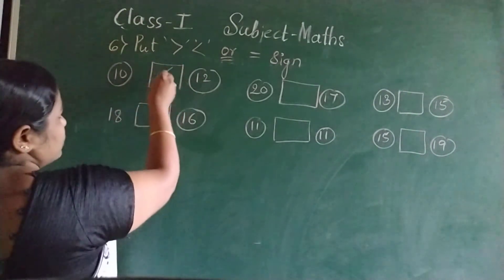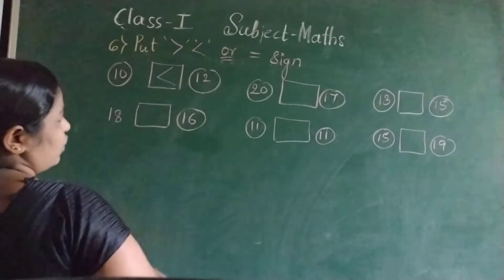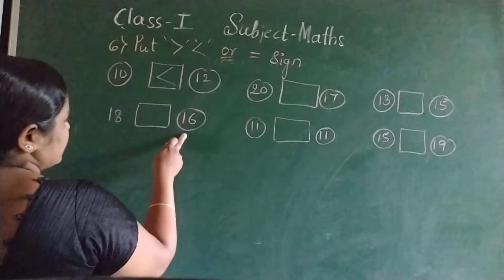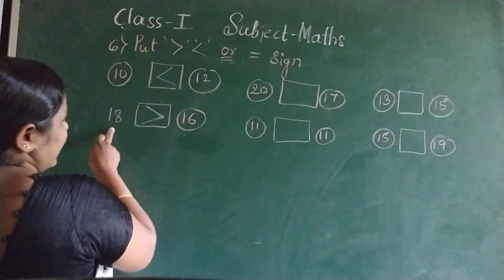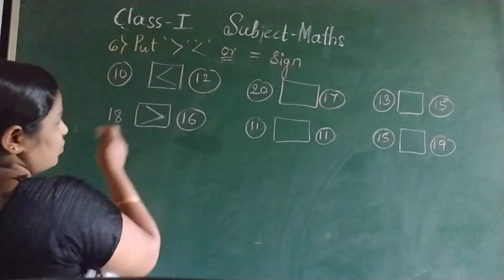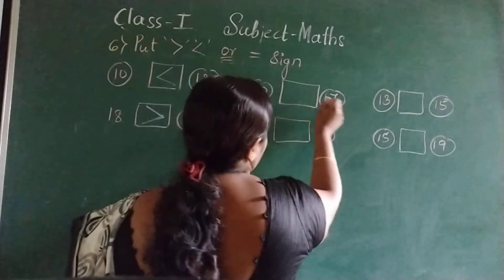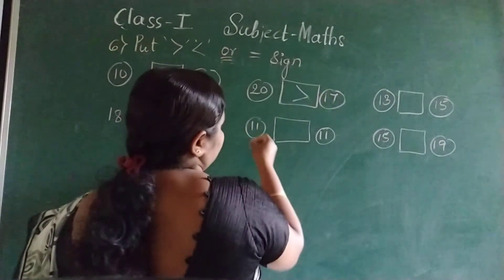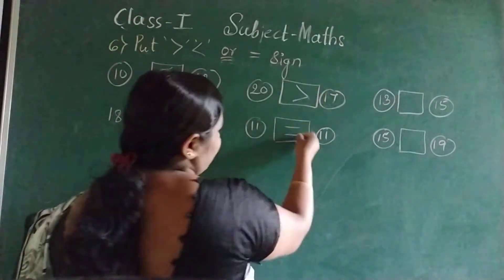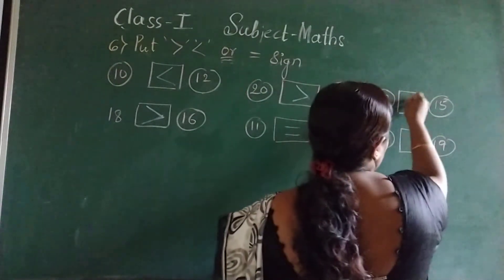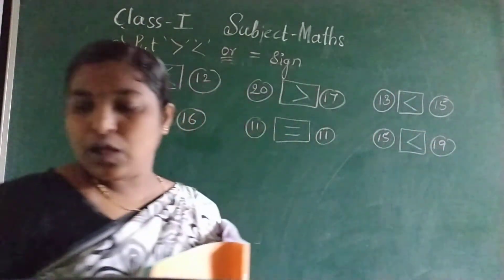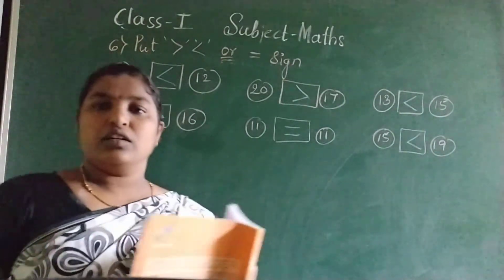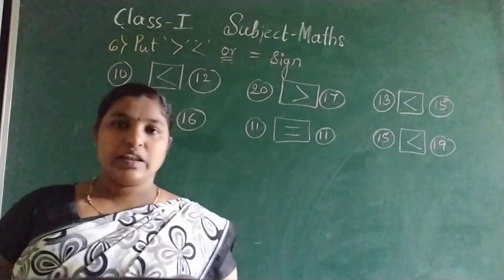10 and 12, 12 is big. So this side it should be open. 18, 16. 18 is big. So which side big number? That side it should be open. 20, 17. 11, 11, both are equal. 13, 15, 15, 16, 19. I hope you are very confident with greater than and less than.